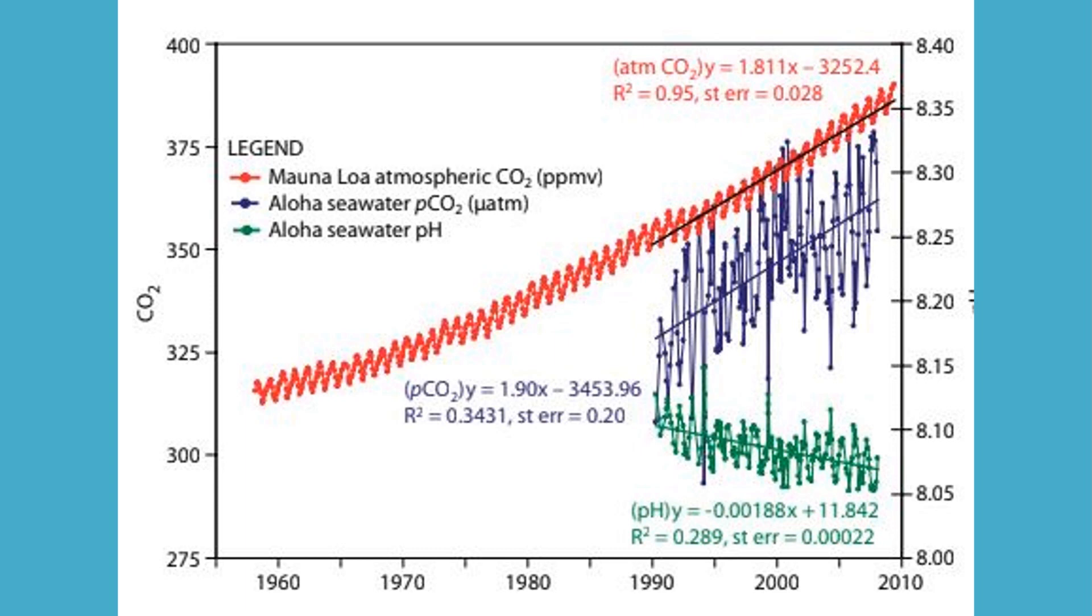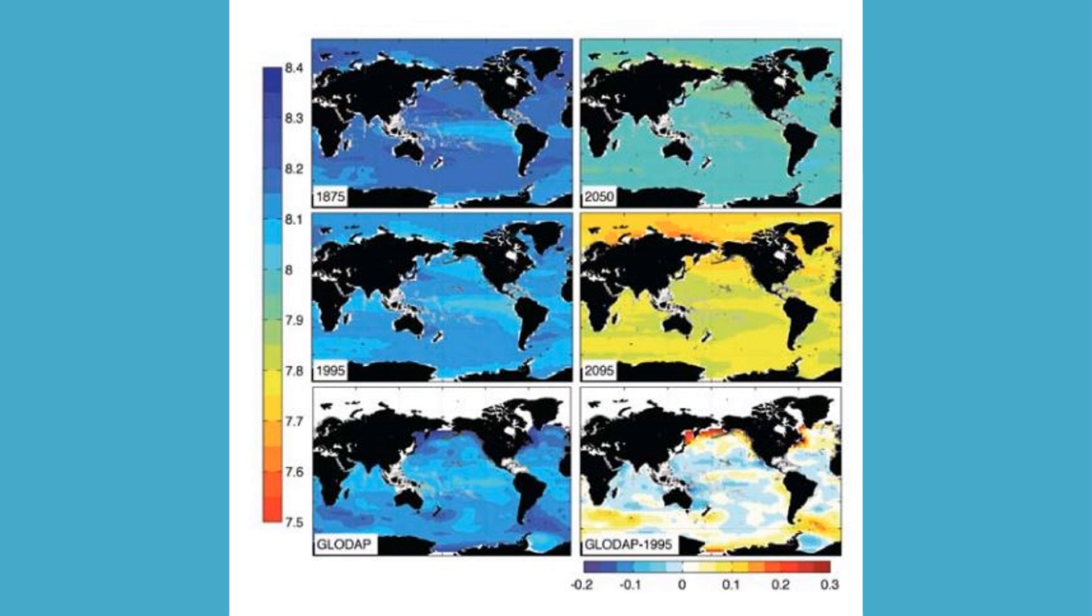So these maps show the changes in pH around the globe based on data collected by two groups in the 90s. This data is compared to models that show what our oceans would look like in both 2050 and 2095 if we continue business as usual as we are now.